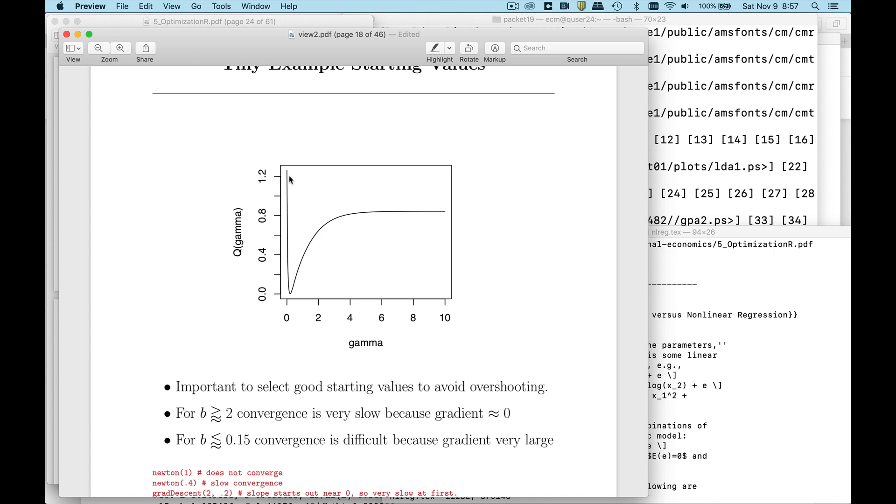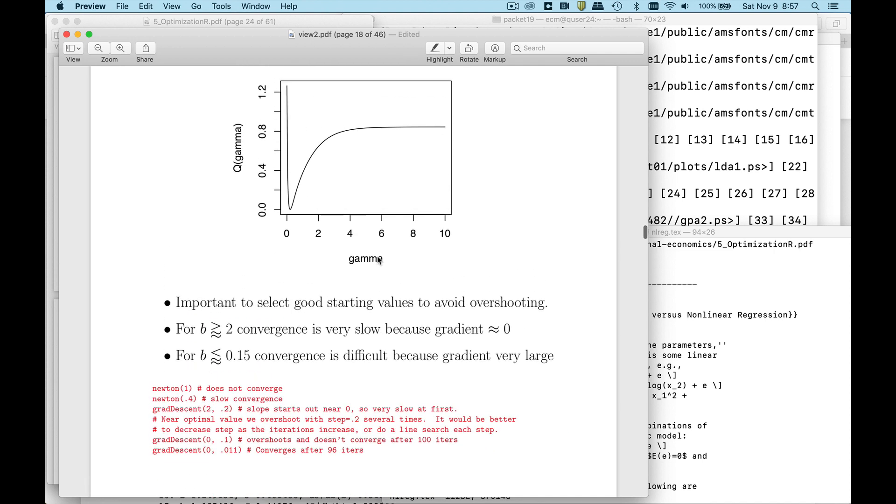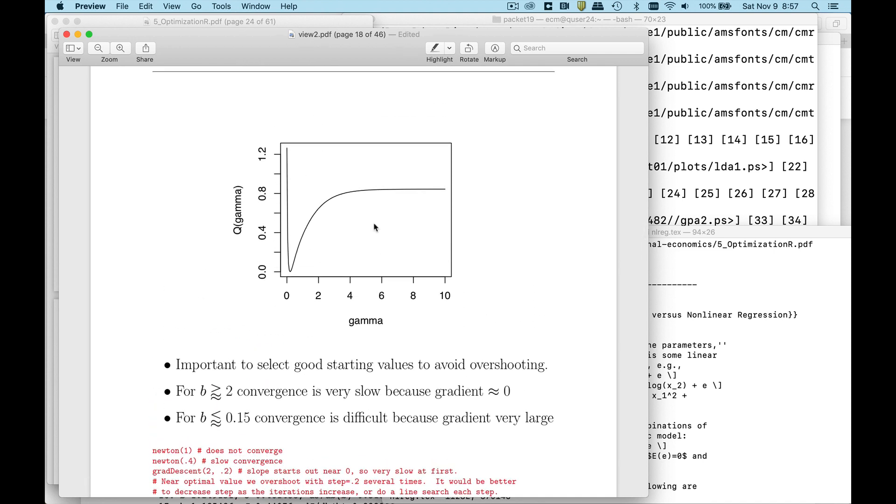I have exactly the opposite problem if I started out over here where the slope is absolutely massive. So unless I have a tiny tiny step size, if I were to start out here I have a very steep gradient. I multiply that gradient times the step size and it's going to send me way over here and I'm going to overjump the bottom. So that is a very difficult problem to overcome. The way we overcome it is hopefully by having good starting values.